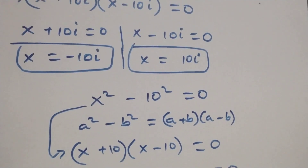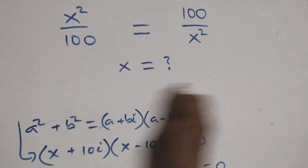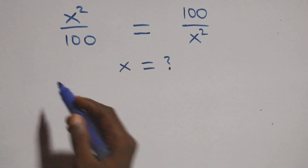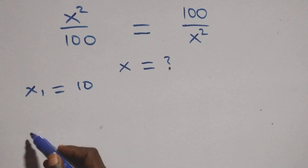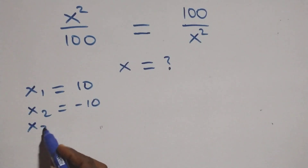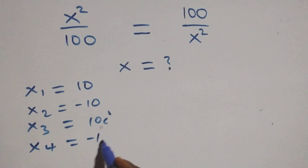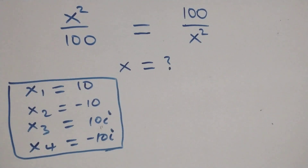So we have two real solutions and two complex solutions — four solutions altogether. Let's write them out: x₁ equals 10, x₂ equals minus 10, x₃ equals 10i, and x₄ equals minus 10i. Now let's check if these satisfy the given problem.